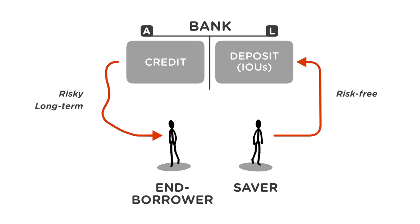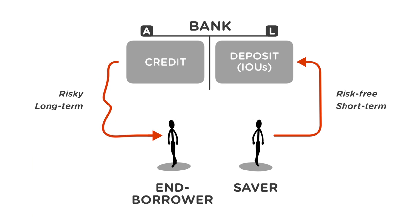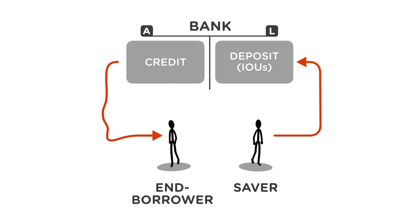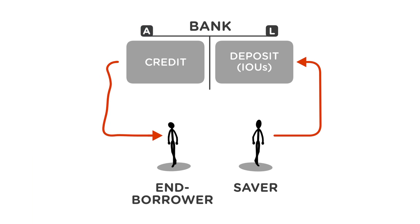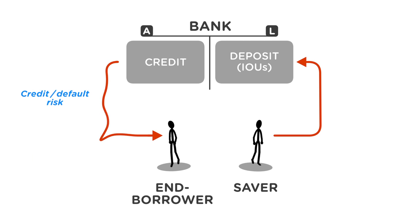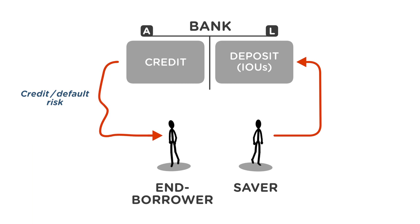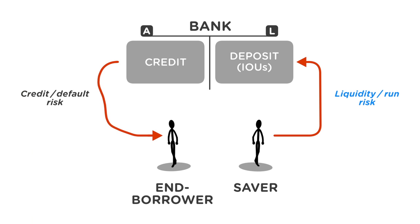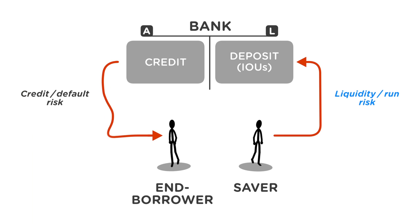Second, the mortgage is a long-term commitment to the bank, while the saver's deposit is short-term. For these reasons, the bank faces two risks. First, on the asset side, there is the possibility that the end borrower does not pay back his debt — the bank faces credit or default risk, represented graphically by the fluctuating curve. Second, the bank faces liquidity funding risk or run risk, which stems from the fact that the credit is long-term while the deposits are short-term. If suddenly all savers withdraw their deposits, the bank will not be able to repay them.